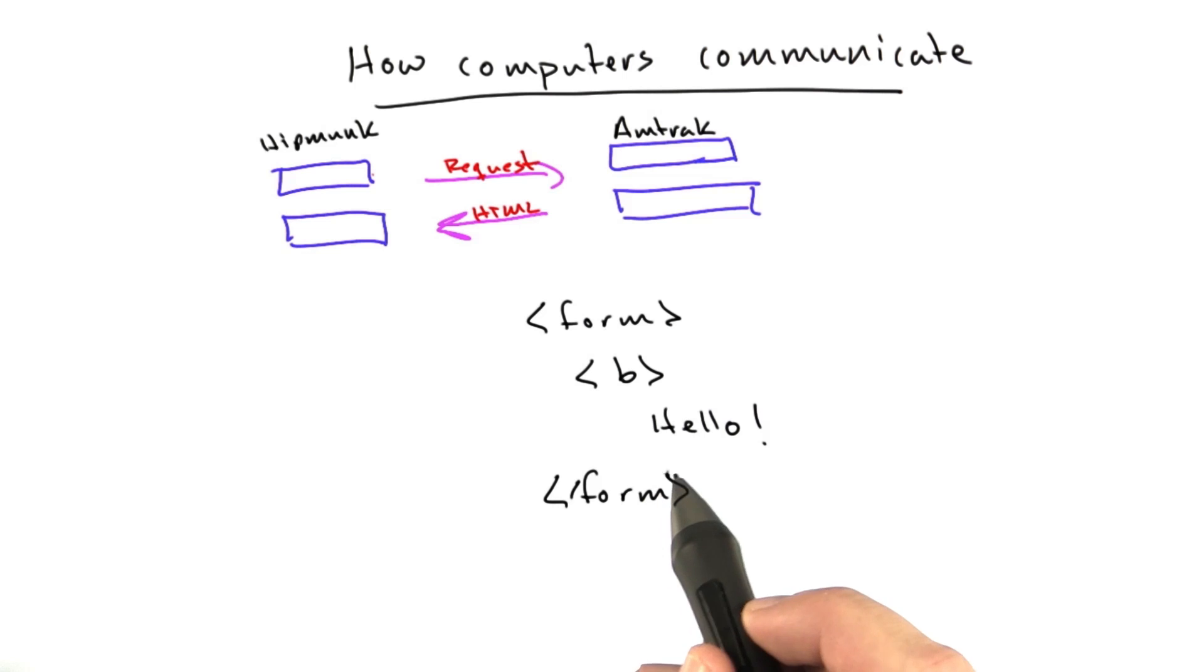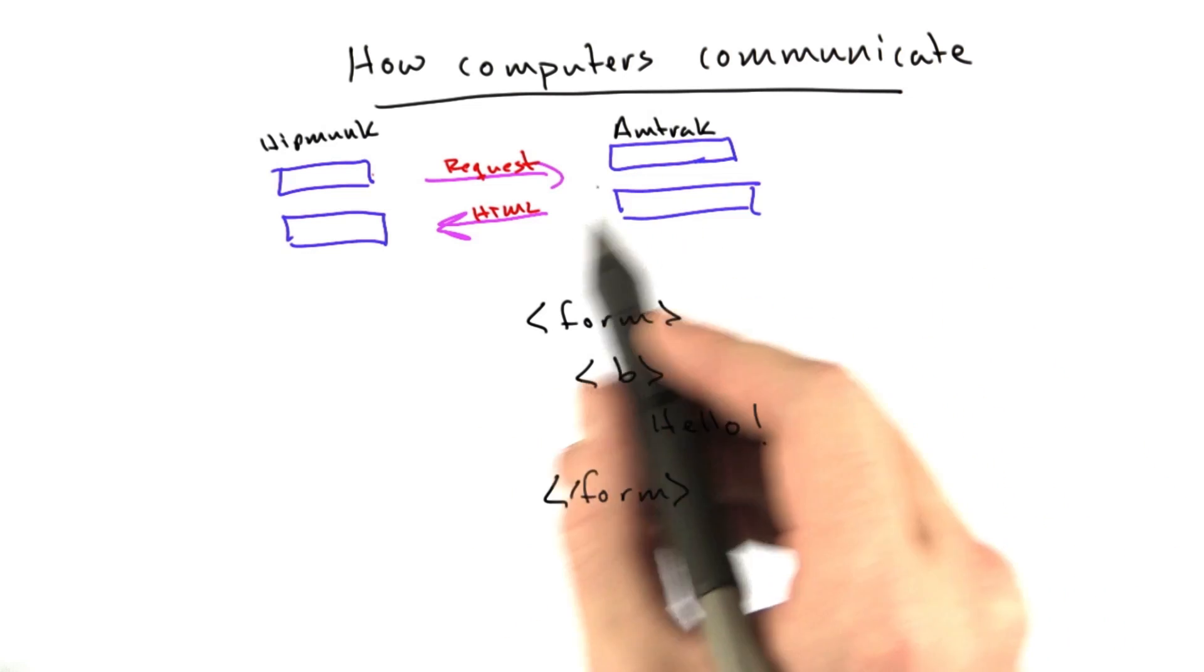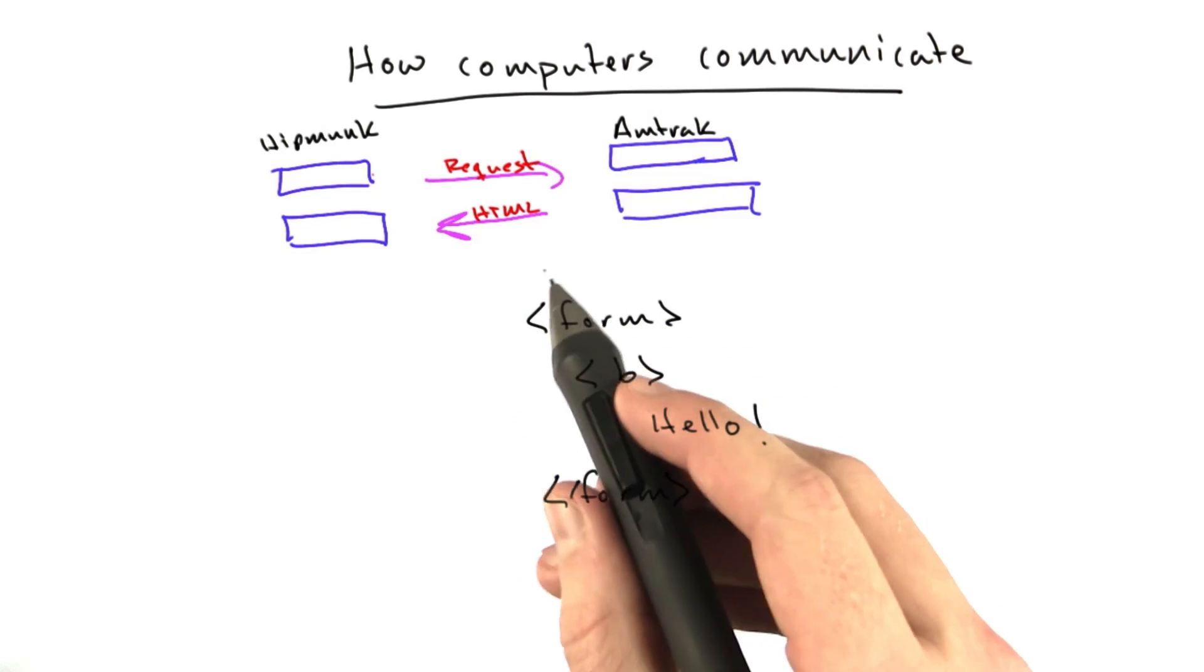But HTML is not an ideal language for computer-to-computer communication, and it turns out on Amtrak we actually get their HTML, and I'm going to show you some of the heartache we have to go through to actually parse this HTML.